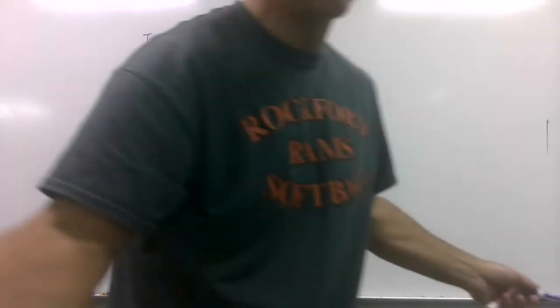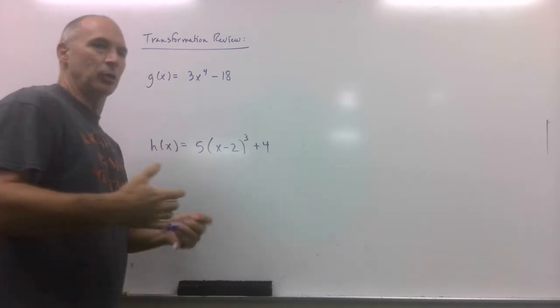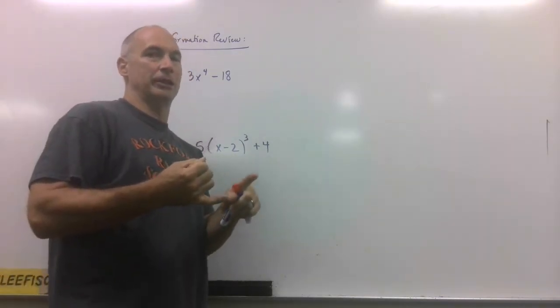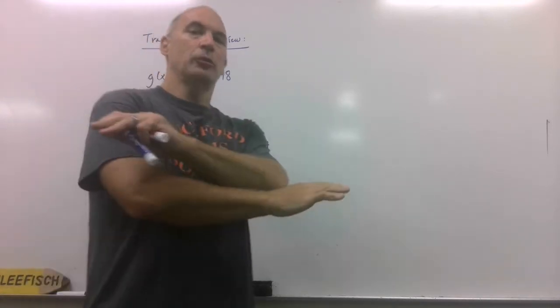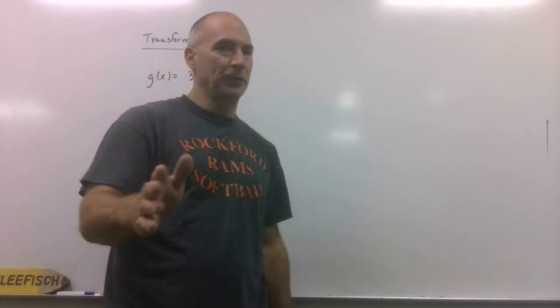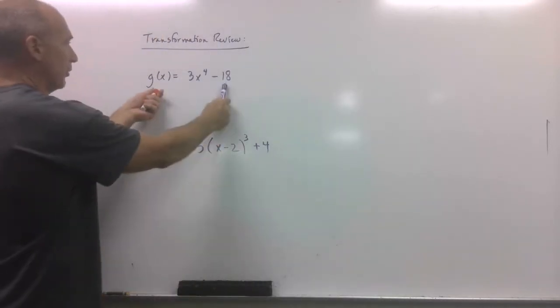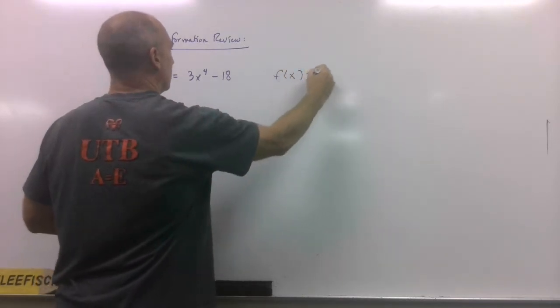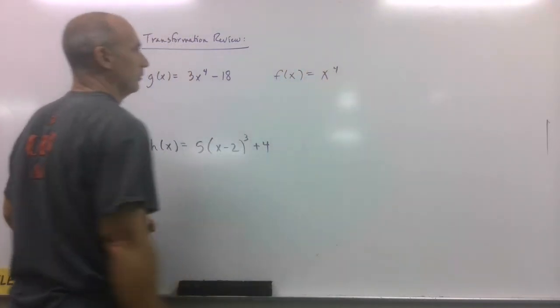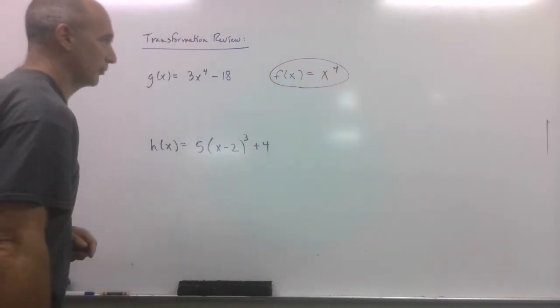All right, transformation review. All they're doing now, you know, we did a lot of quadratics, parabolas, a lot of cubics. Now, they're just seeing if you realize the rules are the rules are the rules, no matter what the graph is. So, having said that, here's your function. The parent function would just be x to the fourth. So, this is your normal one. We talked about that a couple of examples ago.